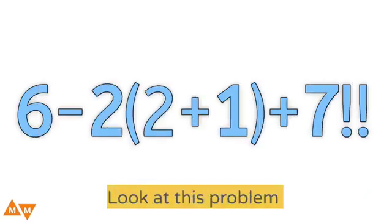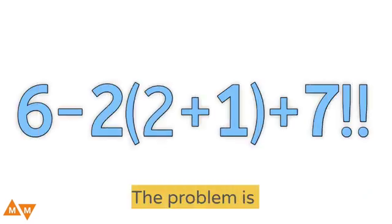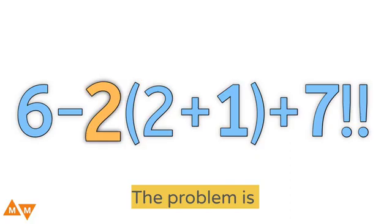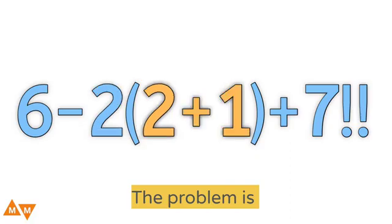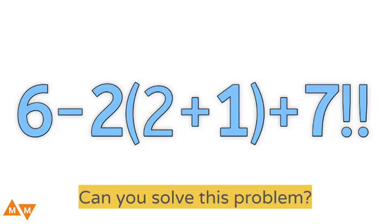Hi guys. Look at this problem. The problem is 6 minus 2 times parentheses 2 plus 1 plus 7 double factorial. Can you solve this problem?